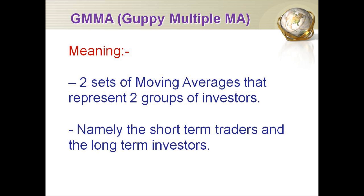GMMA is an indicator used in technical analysis to identify changing trends. The technique consists of combining two groups of moving averages with different time periods. There are two sets of moving averages that represent two groups of investors, namely the short-term traders and the long-term investors.